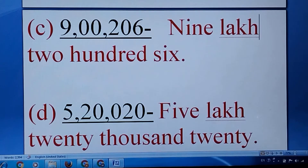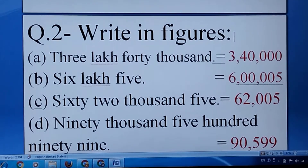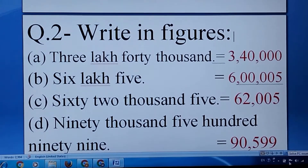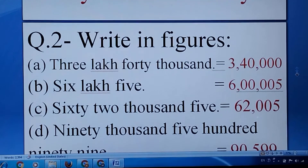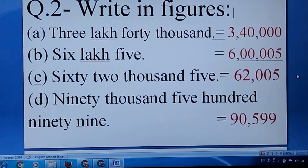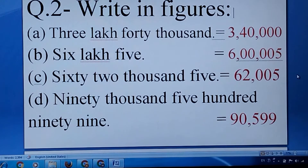Question number two, write in figures: 2c = 206, five lakh = 20,020. Right-hand figure question number two: three lakh 40,000, six lakh five — sixty two thousand five — ninety thousand five hundred ninety nine.